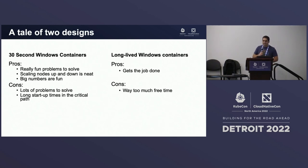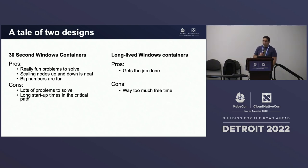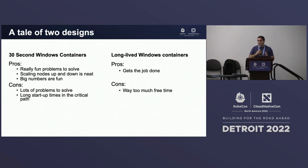A tale of two designs. The developers who built long-lived Windows containers that were just doing workloads — their work got the job done. They had to handle failures from nodes and move to non-busted nodes. We eventually set up some node pools for long-lived containers that let them live in a happier environment. The pros: you get the job done, customers are happy. The big con: you have a lot more free time and PMs keep asking you to put out features instead of fighting fires. Thirty-second Windows containers, however, have a lot of fun platform problems to solve, big numbers, but long startup times in the critical path are a real pain.